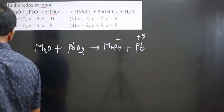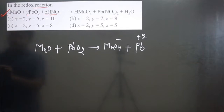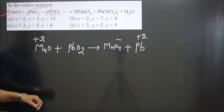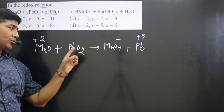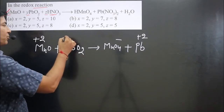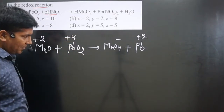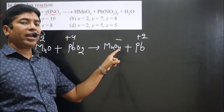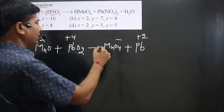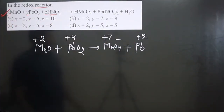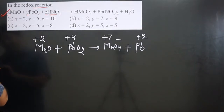Now we write down the oxidation numbers on both sides. Oxygen is minus two. Mn is plus two. For MnO4−: oxygen is minus two, four oxygens give minus eight total, so Mn must be plus seven (permanganate ion). Lead on the product side is plus four; on the reactant side it is plus two.